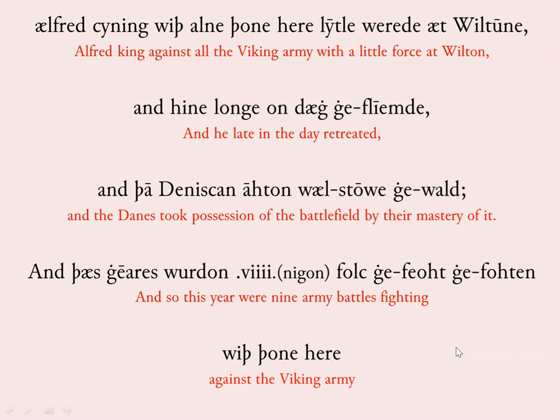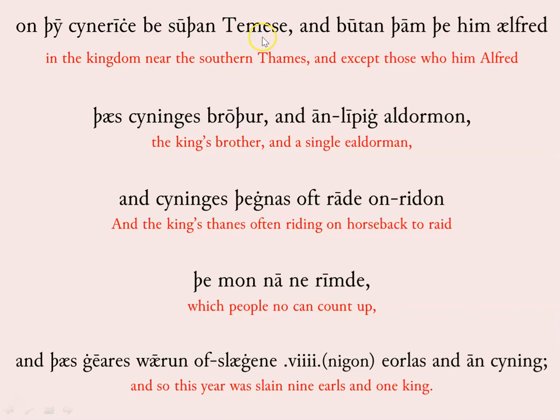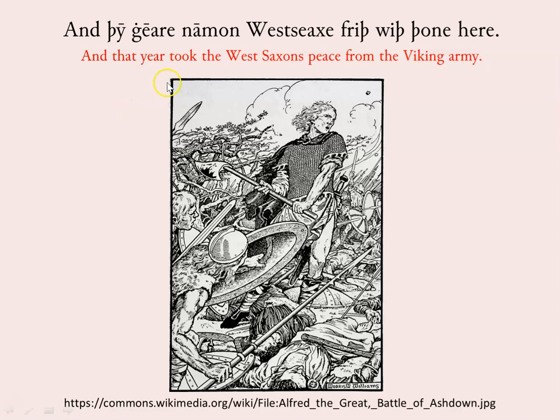The Chronicle concludes: 'On thu cunar eche, besudd an Temese, an buton tham the him Aelfred, thas cynningas brothur, and anlipea aldormon, an cynningas thegnas, ofdara da onaridon, the mon na ne arimde. And thas gear swyrdon nichon folc gefeohte, gefeohtan wyth thon here, and an cynninga.' — Beyond the Thames, apart from those whom Alfred, the king's brother, and individual noblemen and king's thanes had ridden against, that year nine general engagements were fought against the army south of the Thames.